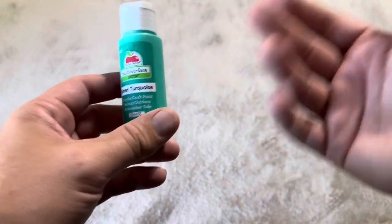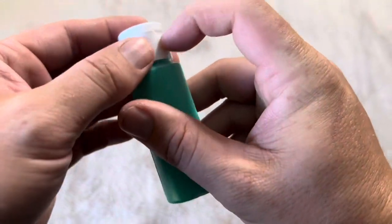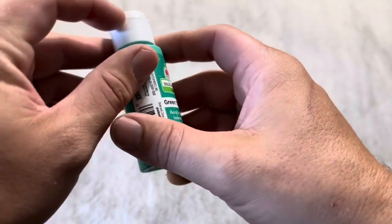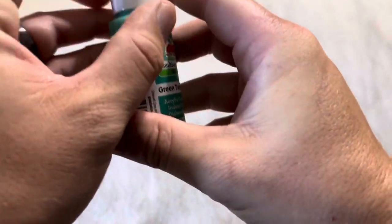They do sell a ton of different colors for this paint, so you can choose exactly what you need or want. This comes sealed with a plastic seal all the way around that you'll have to rip off and remove.